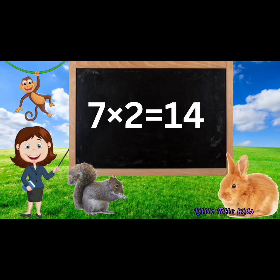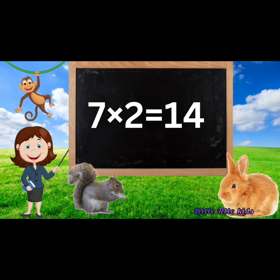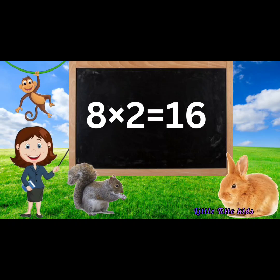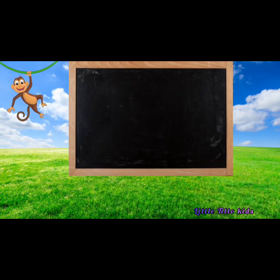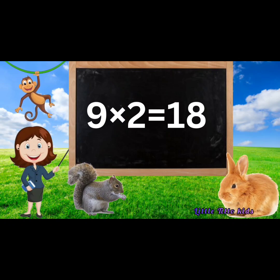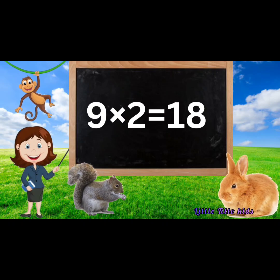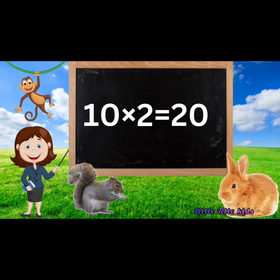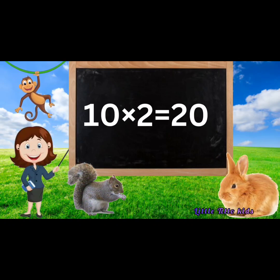Seven two's are fourteen. Eight two's are sixteen. Nine two's are eighteen. Ten two's are twenty. Thank you.